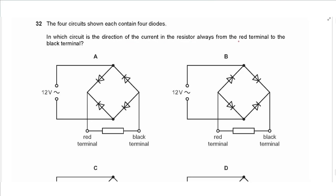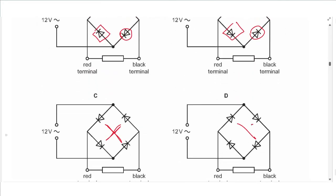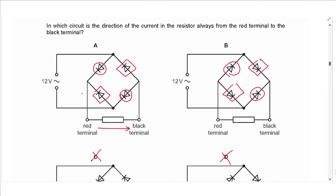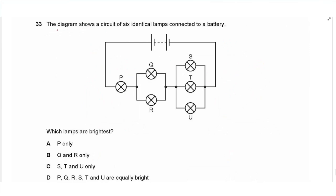Question 32: which circuit causes current in the resistor to always flow from the red terminal to the black terminal? This is a full-wave rectifier. In a full-wave rectifier, opposite diodes must point in the same direction. Both A and B satisfy this, but in B the diodes are oriented so current cannot reach the required point. In A, current can flow to the red terminal in both half-cycles. The answer is A.